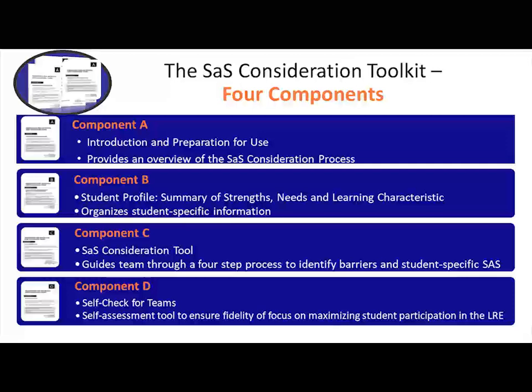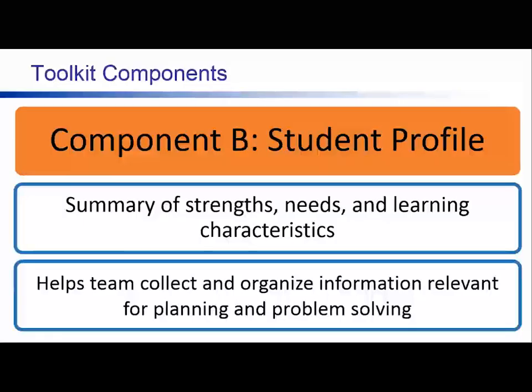The toolkit design includes four separate components: Component A, B, C, and D. Component A gives you an overview of the toolkit and instructions for facilitating it. Component B focuses on developing a description of the student. Components A and B can be mostly completed before the team meeting, with a review at the meeting by the facilitator. Component C is the heart of the SAS toolkit — the team develops a profile of the general education setting, identifies potential barriers to access, and then identifies strategies and services to eliminate the barriers. Component D includes a fidelity self-assessment tool that can be used after the toolkit process has been implemented and the action plan is in place.